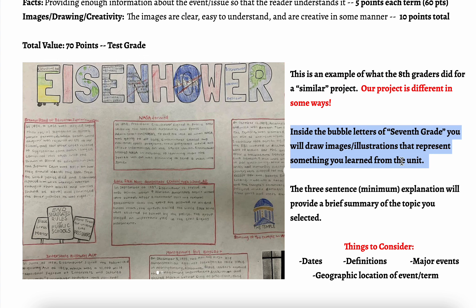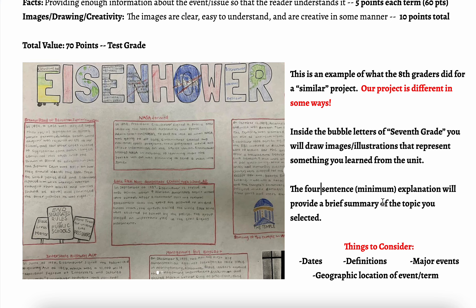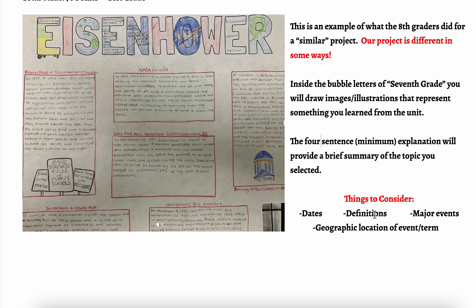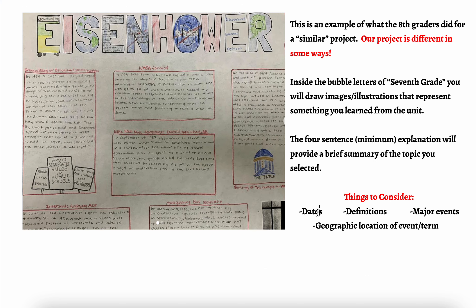Again, bubbling the letters, '7th grade,' drawing the images inside of the letters. Again, this is supposed to say four — four sentence minimum that will explain the brief summary. Things to consider: give me dates. Like the Renaissance — give me some dates. The Age of Exploration — give me some dates. Give me some definitions, like what does Renaissance mean?